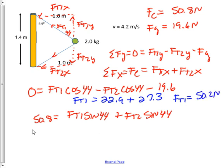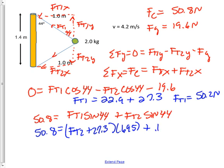And the expression down here in this direction, we would have 50.8 is equal to, we'll solve in for force tension 1, FT2 plus 27.3 multiplied by 0.695, plus 0.695 FT2, and force tension 2 has a value then of 22.9 newtons.